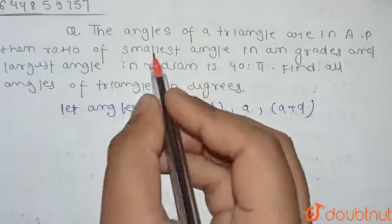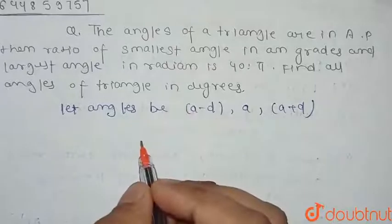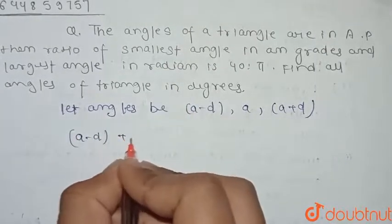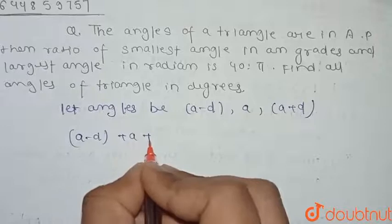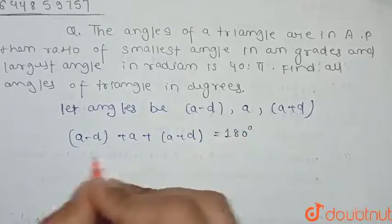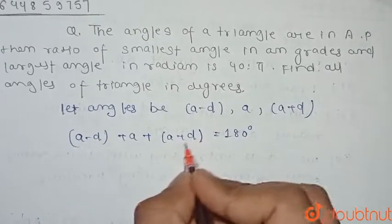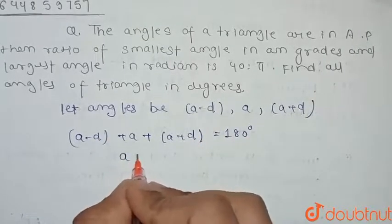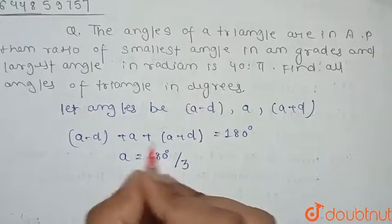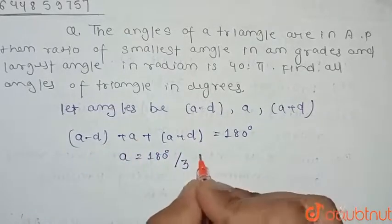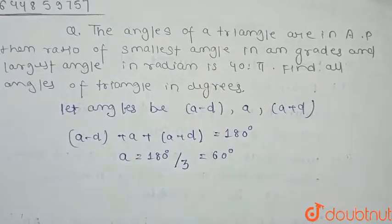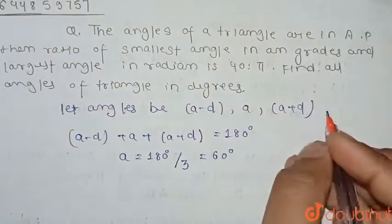We know that the sum of angles of a triangle is equal to 180°. So (a-d) + a + (a+d) = 180°. The -d and +d cancel, leaving 3a = 180°, so a = 60°.